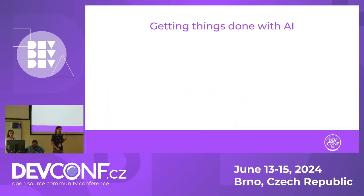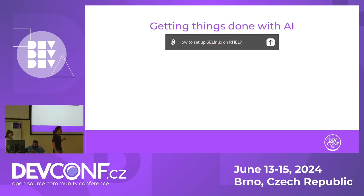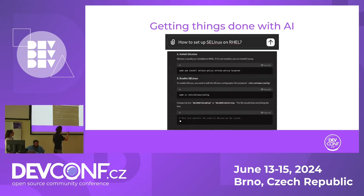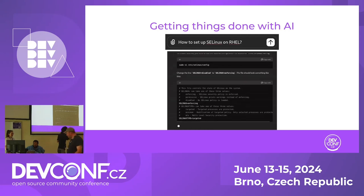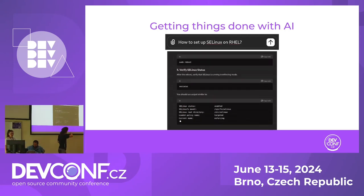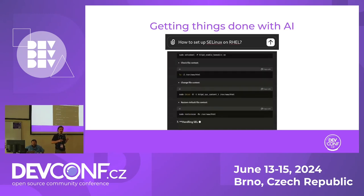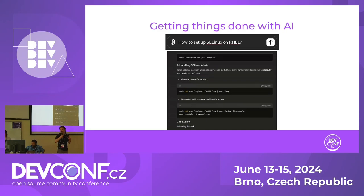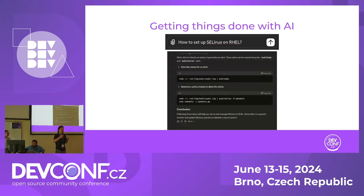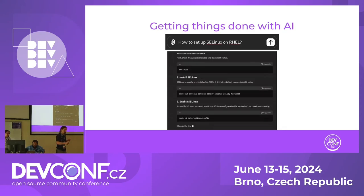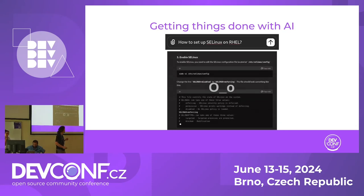But maybe ChatGPT could help me get my job done — I've heard it knows a lot. So I ask my query, punch it into the ChatGPT prompt, and voilà! Right away I have a step-by-step guide on how to set up SELinux on RHEL. It's nicely structured, it has highlighted commands, it even has the copy code function with just a click of a button. And crucially, I did not have to search through available resources or decide which document to go with. I had all I needed right in front of me, right away. That seems pretty compelling.